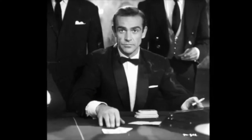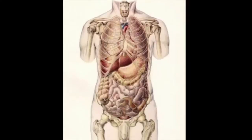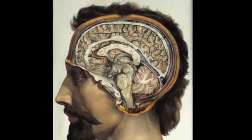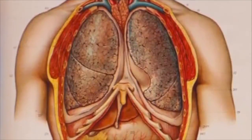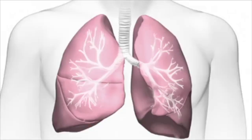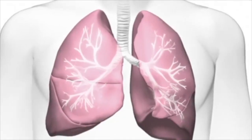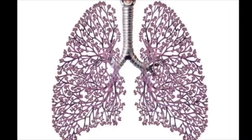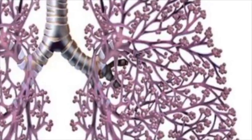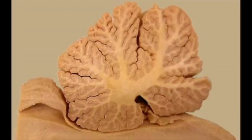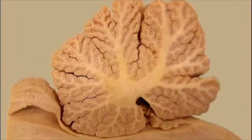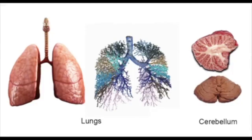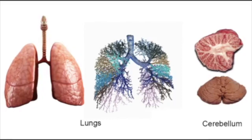Let's now look at the organs in the body and their respective counterparts in the head. The first organ, going top to bottom through the torso, are the lungs. I believe the counterpart of the lungs is no other than the cerebellum. If we look at the structure of the lungs, we'll see that the bronchi branch out in a fractal manner. Likewise, the cerebellum has a structure called the arbor vitae that also branches out in a similar way. This fractal distribution is a distinctive trait of these two parts of the body.